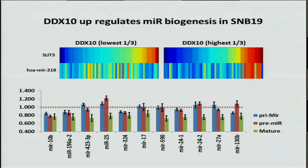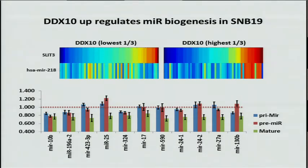Doing this in a higher-throughput manner, we identified a set of microRNAs of interest, designed probes that measure the expression of mature, pre-, and pri-products, silenced DDX10, and measured the response of these MIRs to the downregulation of DDX10. What you see here is a panel of MIRs where the mature microRNA responded to the downregulation of DDX10, while the intermediary products are relatively unchanged.